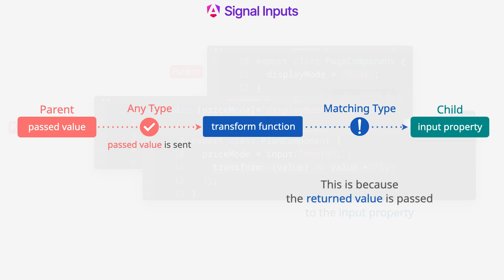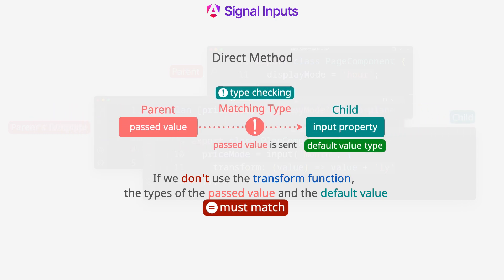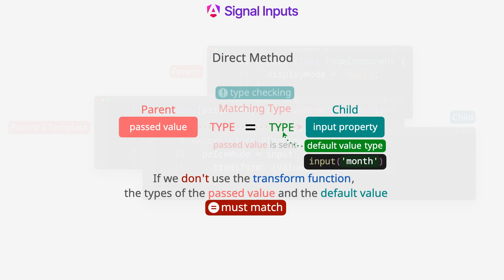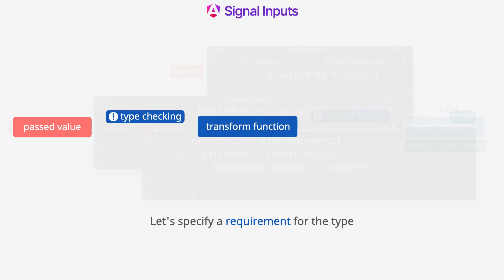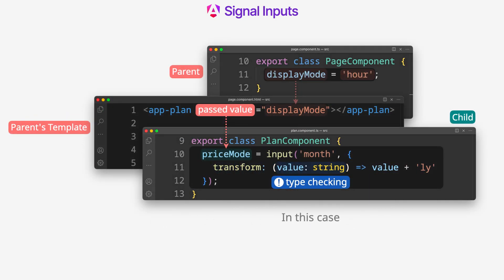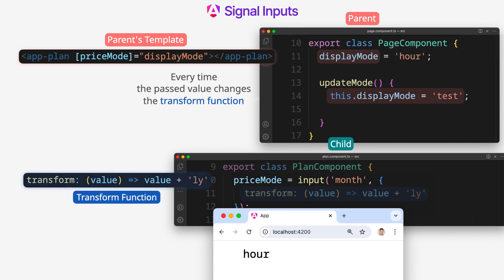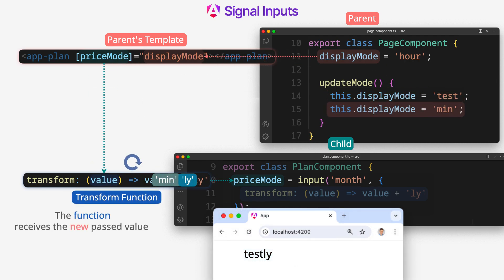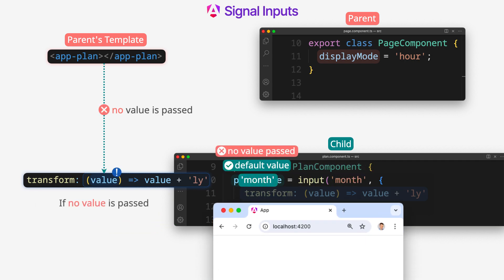When using the transform function with a default value, the type of the passed value doesn't matter — what matters is the type returned by the function. The passed value is sent to the transform function, not directly to the input property. The transform function intercepts the passed value, so its type doesn't matter; the type returned by the function must match the default value type. We can also use the transform function with a type requirement for the passed value, specifying that it must be of one or multiple specified types. Every time the passed value changes, the transform function is executed automatically. The function is only executed for passed values, not for default values.